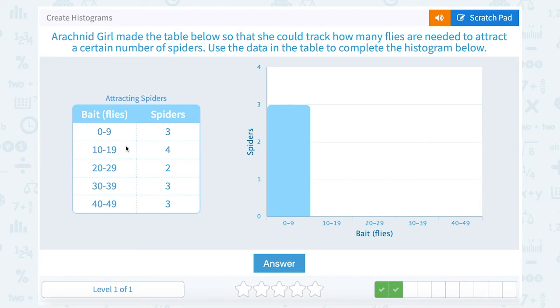For 10 to 19 flies she caught four spiders. For 20 to 29 flies, two spiders. For 30 to 39, three spiders. And for 40 to 49, also three.